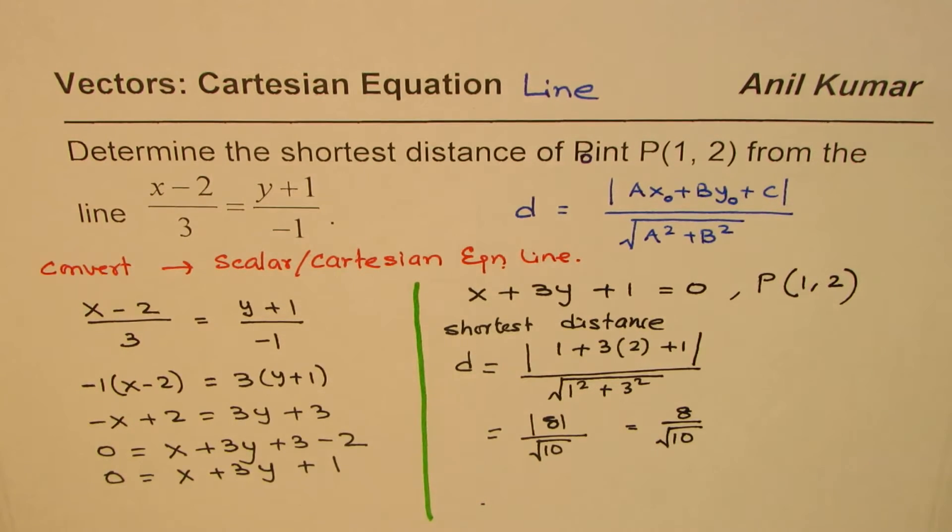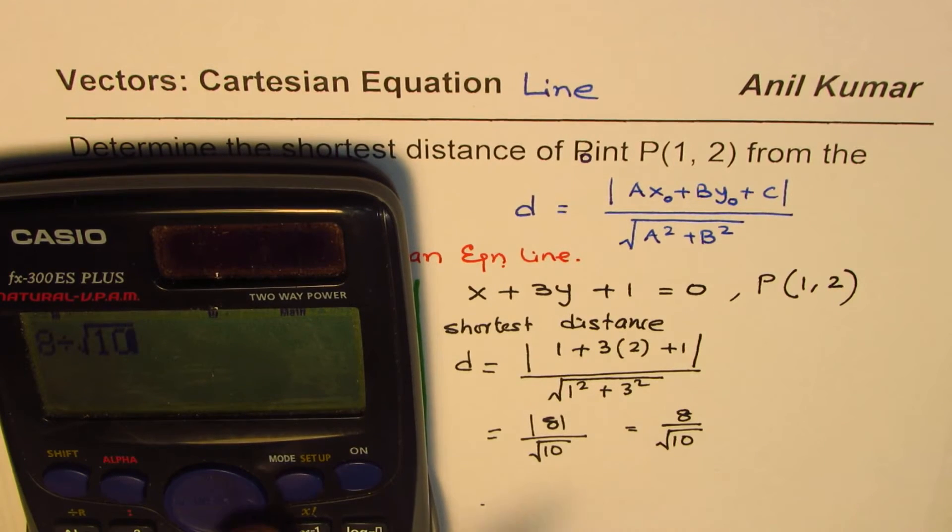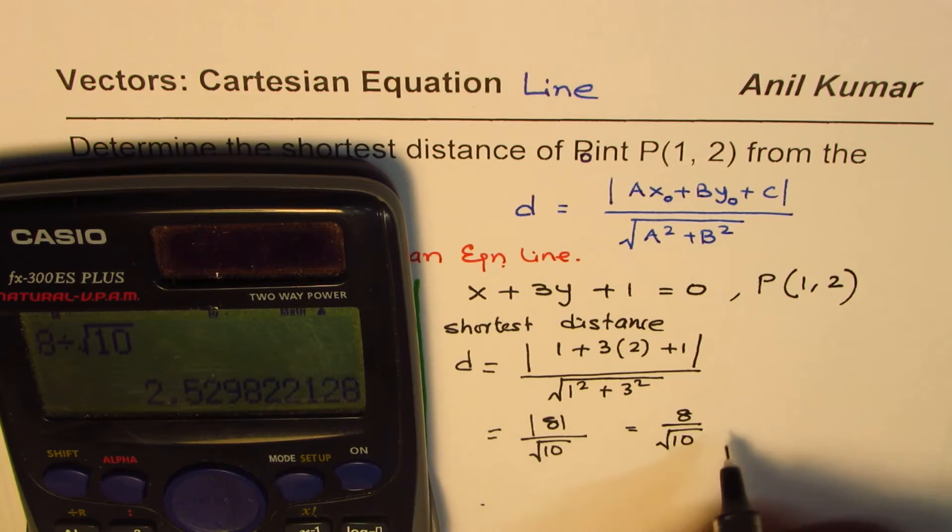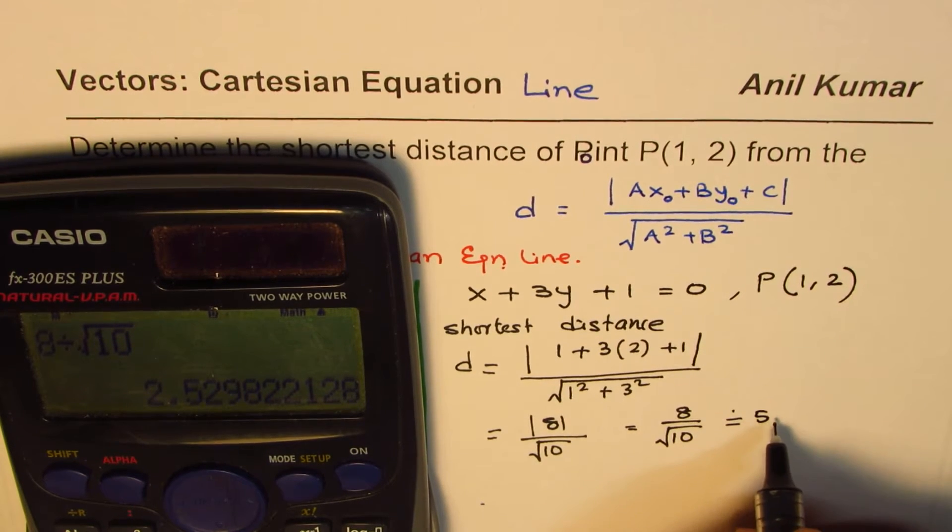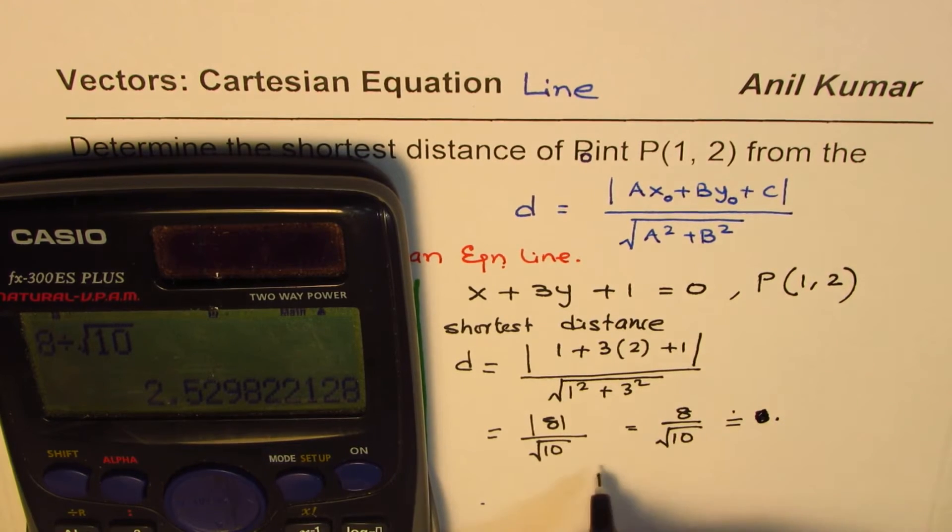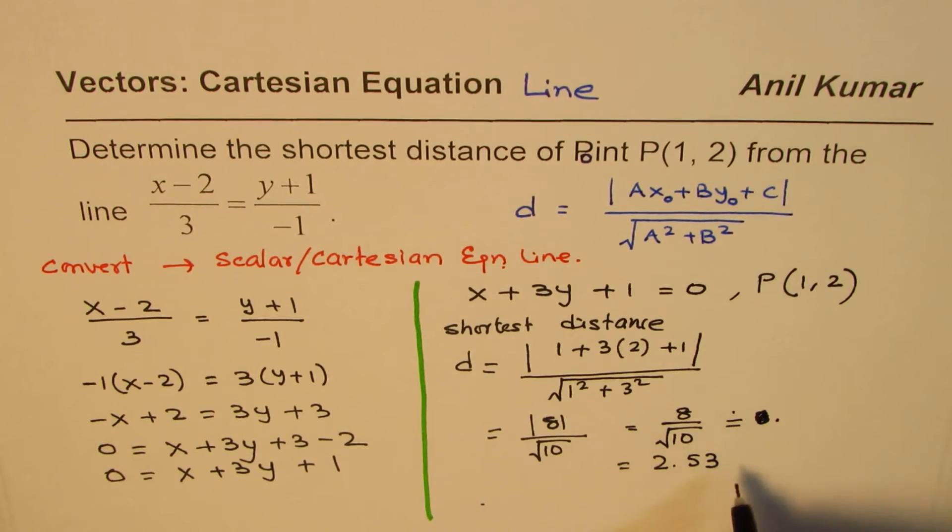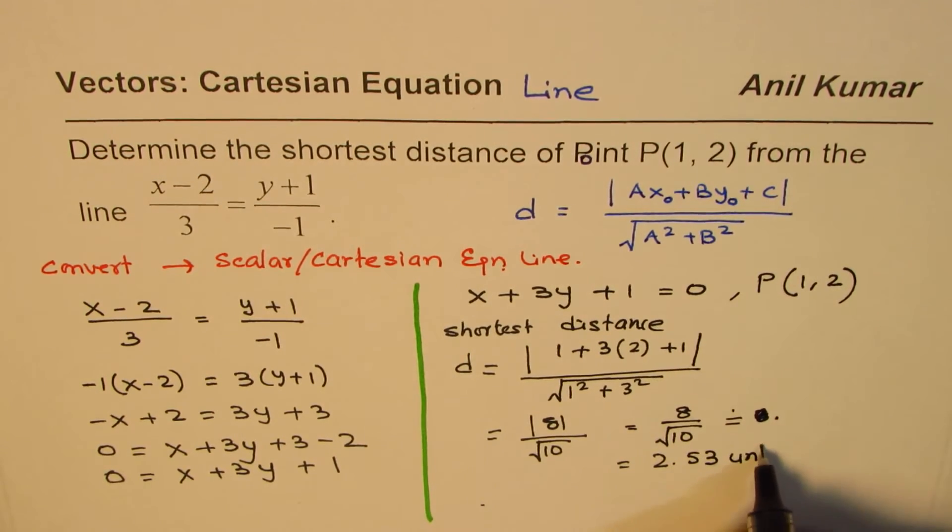We can actually use a calculator to write it in decimal values. So we have 8 divided by square root of 10 and that is equal to, in decimals, approximately 2.53 units. So the approximate distance will be 2.53 units.